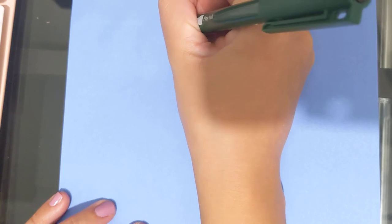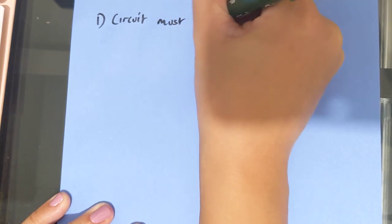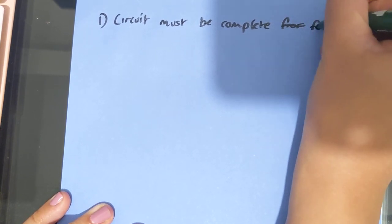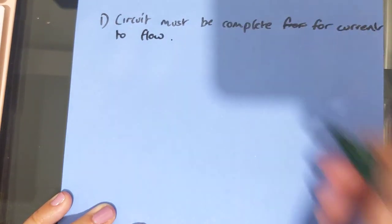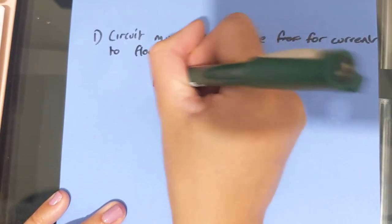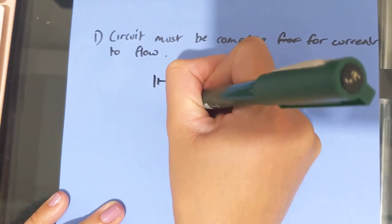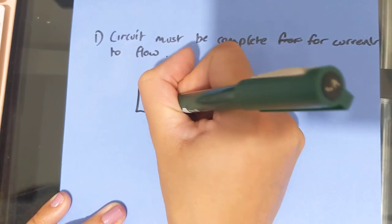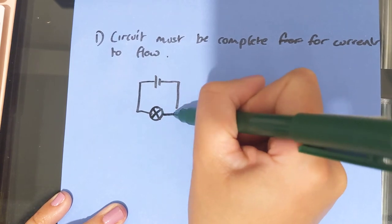Next thing to be aware of is we need to be able to follow certain rules of a circuit. So the first one is that the circuit must be complete in order for current to flow. So circuit must be complete. So what do I mean by this? It means that all of the connections need to be joined up. So if I was going to have a cell powering, say, a light bulb like this, it's not going to work until I join the connections up.